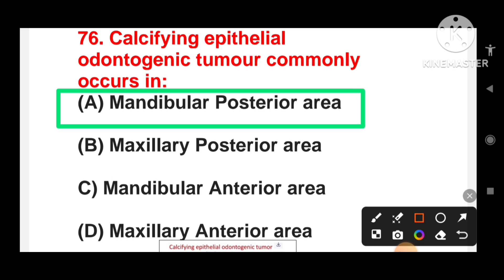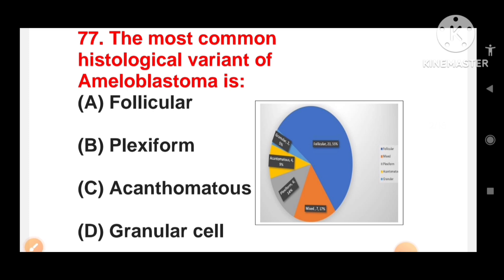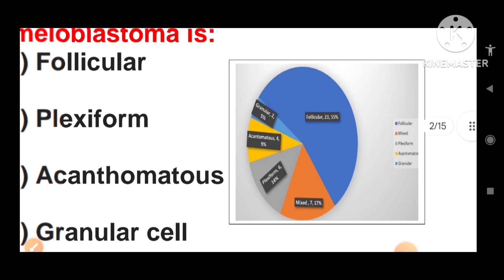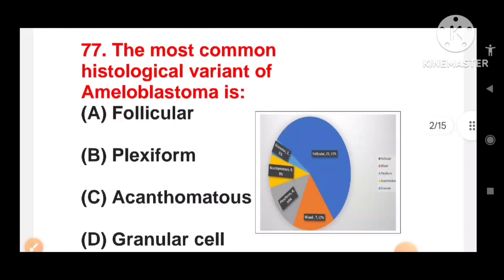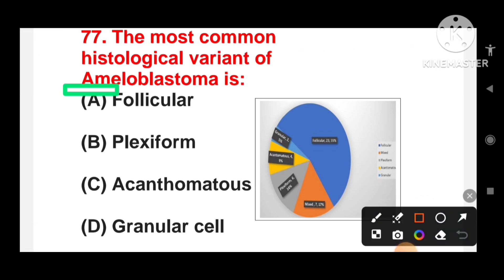Calcifying Epithelial Odontogenic Tumor commonly occurs in Mandibular Posterior Area and it is also known as Pindborg Tumor. Next question is, the most common histological variant of ameloblastoma is follicular, plexiform, acanthomatous or granular cells? So I have shown you here that follicular is 23.55%, granular 2-5%, acanthomatous 4-9%, plexiform 6-14% and mixed 7-17%. The most common histological variant of ameloblastoma is follicular.